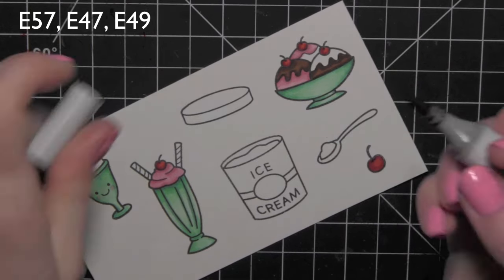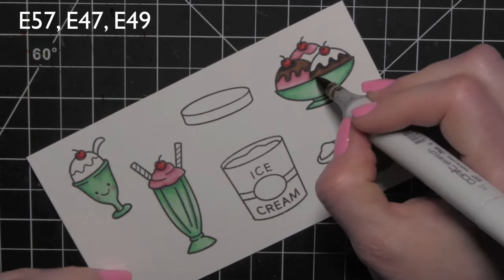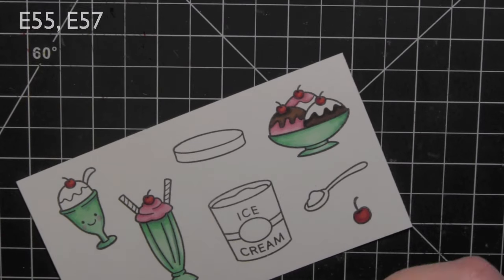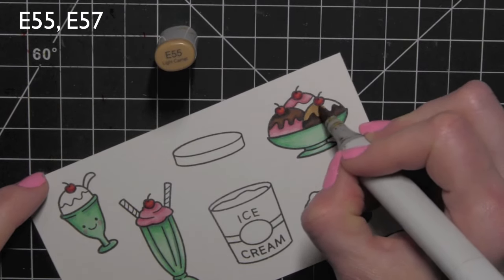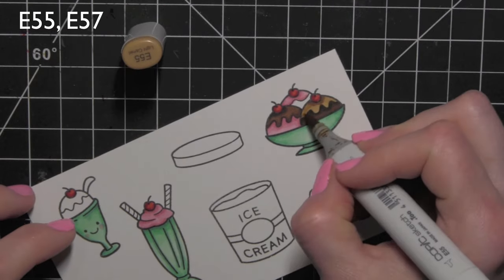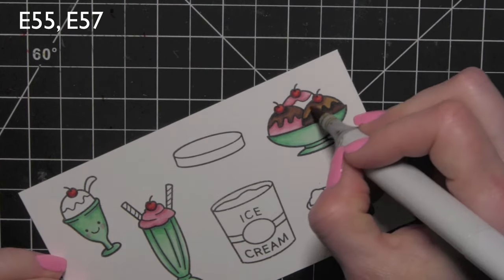That E47 gives it a nice dark color, the E49 even darker and then blend it back out with E57. For the caramel topping I'm using E55 and just a very tiny bit of E57 to blend that out and maybe add a tiny bit of shading.